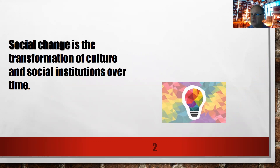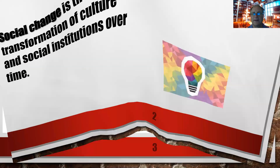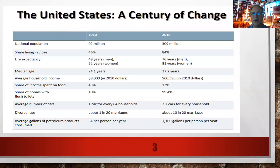The rate of change has never been faster than it is now. Let's take a look at some social change in the U.S., comparing the year 1910 to 2010. You can see, for example, that the national population has gone up significantly, so has life expectancy and median age. We also have a larger share of homes that have flushable toilets, and the divorce rate has gone up.